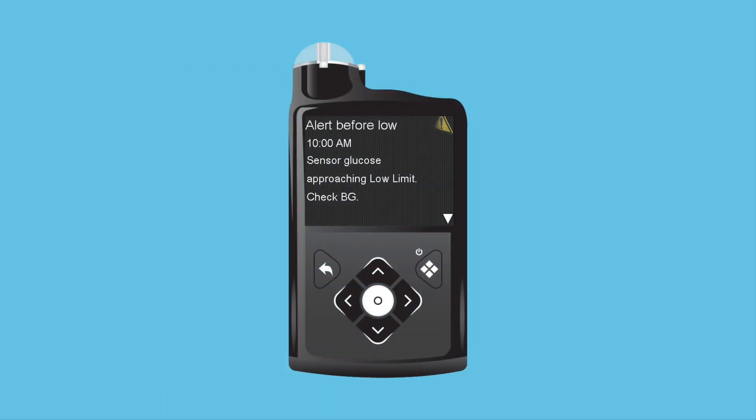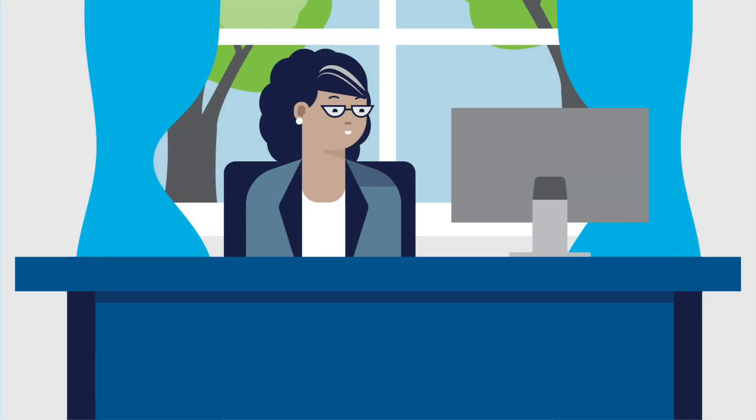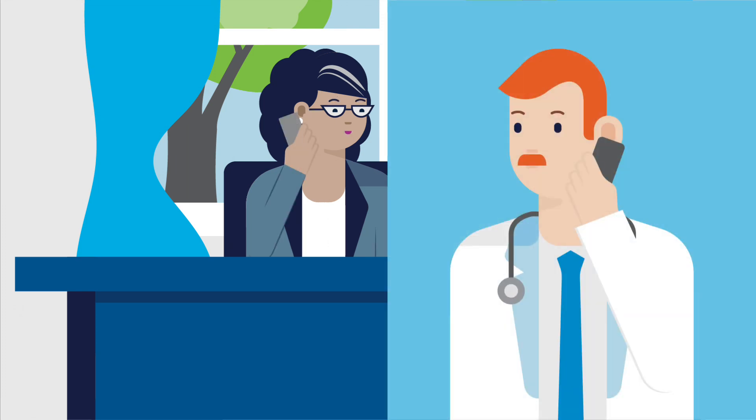Lisa sees that with CGM, not only can she set her pump to alert her when her glucose is low or high, but also when the pump predicts her glucose will go low or high. Lisa likes the idea of knowing she is going low before she actually gets there. Having more information on what her glucose is doing may help Lisa and her doctor identify why she is having these unexpected lows during the day and make any needed changes.